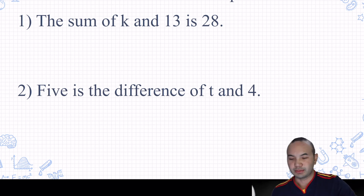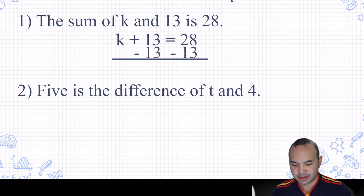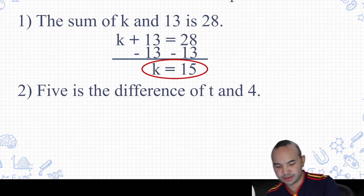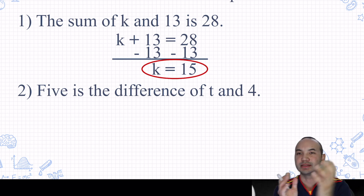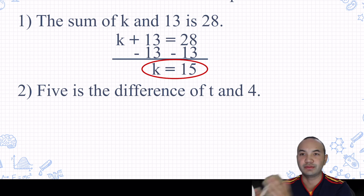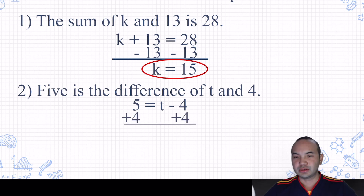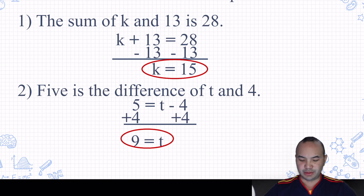Now translate the sentence into an equation and solve. 'The sum of K and 13 is 28' — sum means add, so K plus 13 equals 28. Use the subtraction property of equality, subtract 13 from both sides: K equals 15. '5 is the difference of T and 4' — difference means subtract, so 5 equals T minus 4. Add 4 to both sides: T equals 9. Check: 9 minus 4 equals 5 — correct.